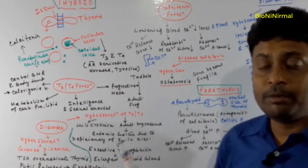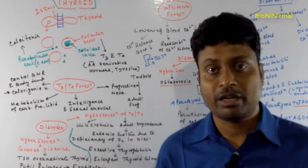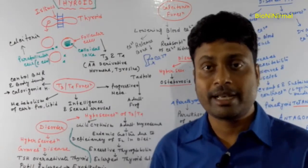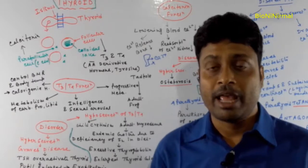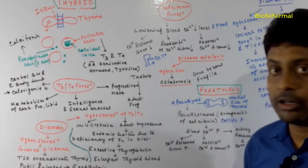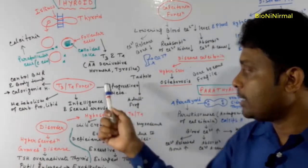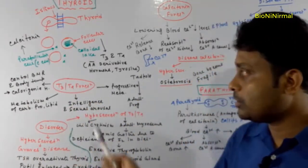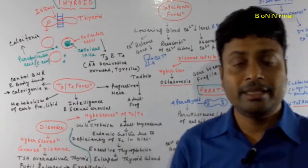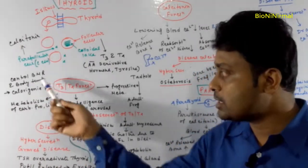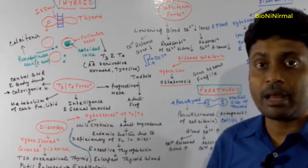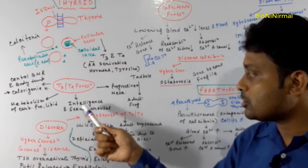Now let us see the function of the thyroxine hormone. First, thyroxine is a kind of amino acid derivative hormone, and it is actually made from the tyrosine amino acid. The thyroxine hormone controls the BMR and body temperature — since it controls body temperature, it is called the calorogenic hormone. It also controls the metabolism of carbohydrates, proteins, and lipids, as well as intelligence and sexual arousal.